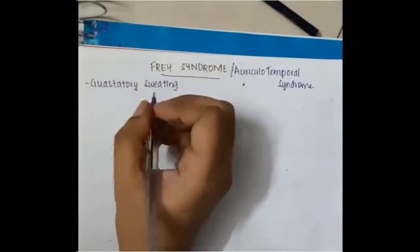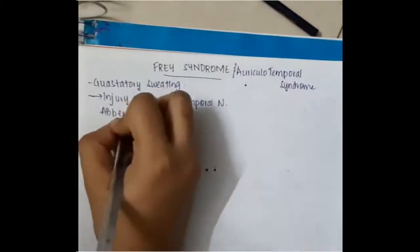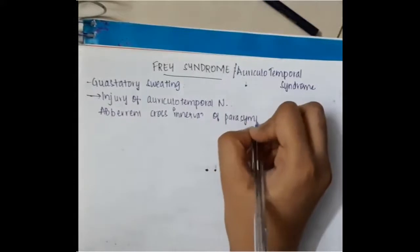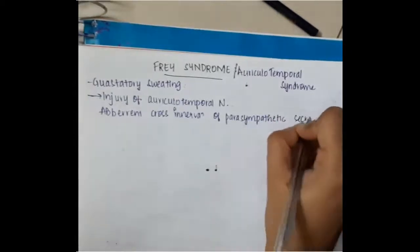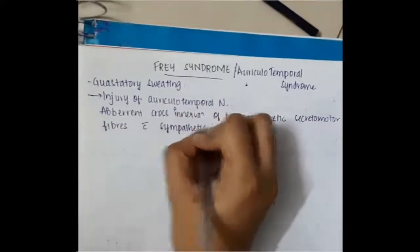Here, this is associated with gustatory sweating. Injury of auriculotemporal nerve is due to injury of auriculotemporal nerve which causes cross connection or aberrant connection between the parasympathetic secretomotor fibers with the sympathetic fibers of the sweat glands.